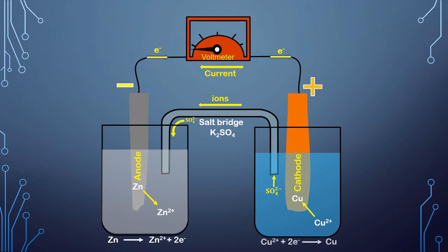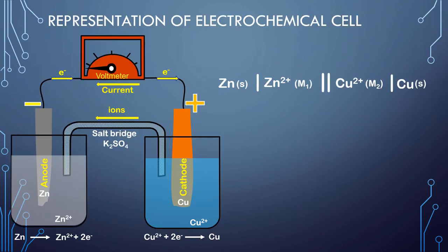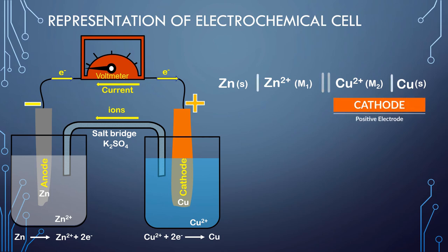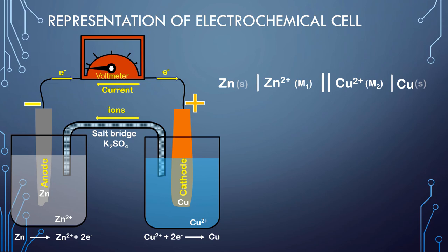On paper, this Daniel cell can be represented as follows: the anode or negative electrode is written on the left-hand side and indicates the oxidation side — that is, Zn to Zn²⁺. The cathode or positive electrode is written on the right-hand side and indicates the reduction side — that is, Cu²⁺ to Cu. The single vertical line indicates the phase boundaries of electrodes and the double vertical lines represent the salt bridge. The states of each half cell and the concentration of ions are also indicated within small brackets.